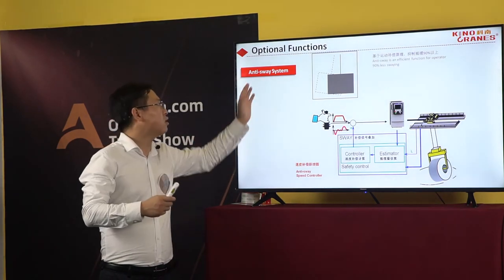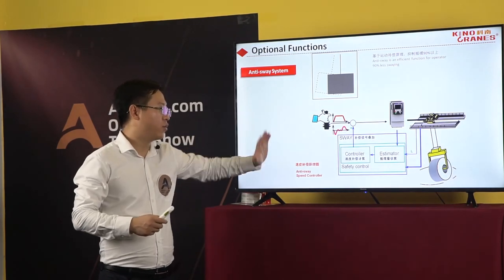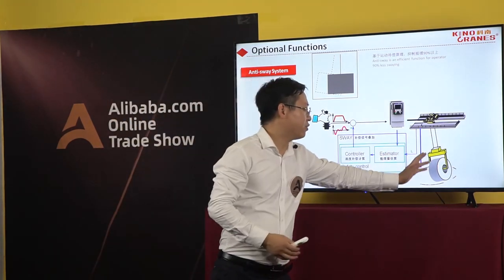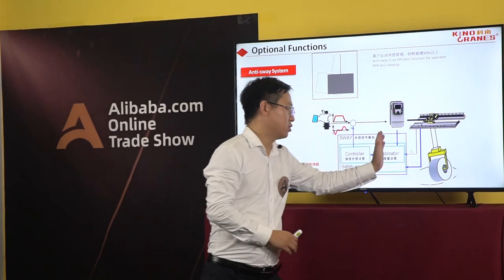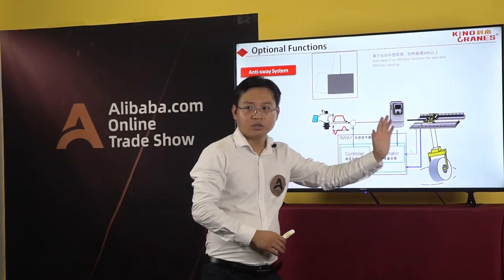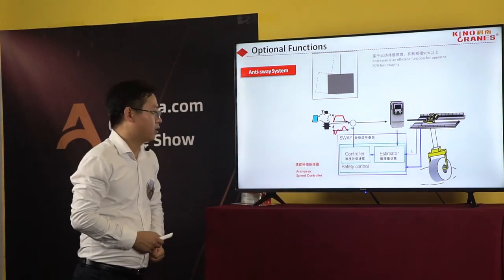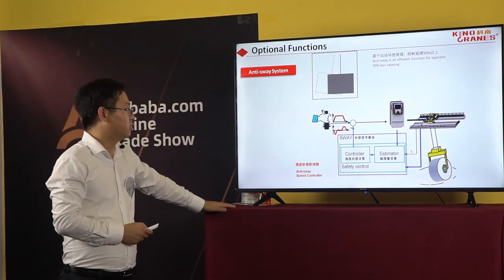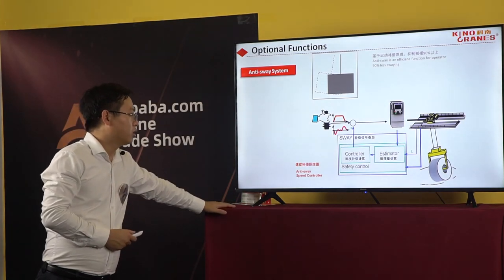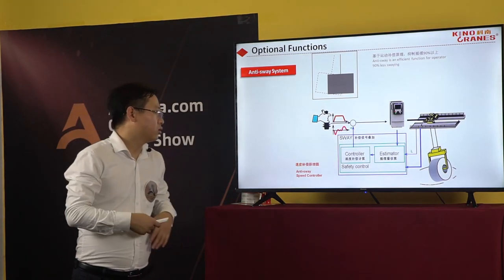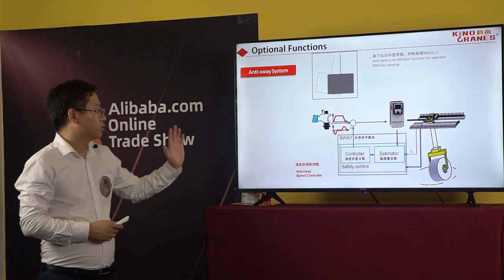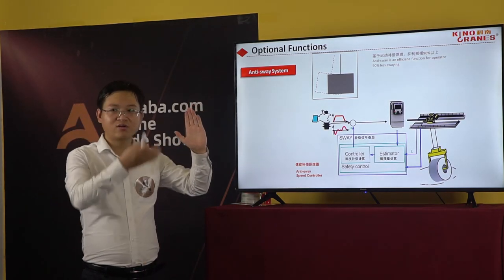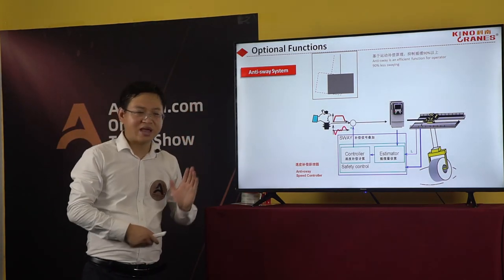The Anti-Swing function is an efficient function for operators — 90% less work. Anti-Swing is very easy. Without this function, the crane will swing when lifting. If we use this function, it will make sure the crane always vertically lifts and travels.